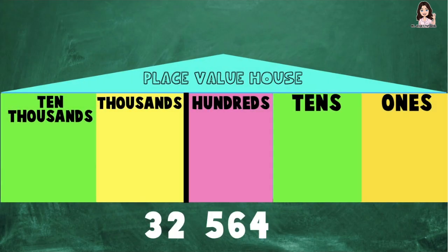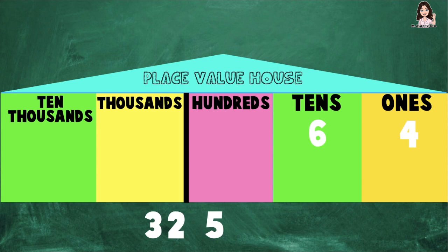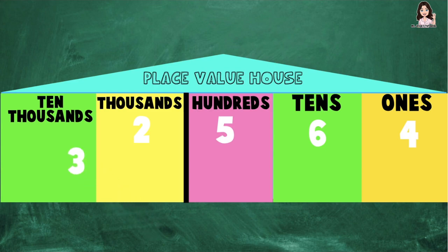For example, I have the number 32,564. Again, children, let's find out first the place value of each digit. Digit 4 — that's correct, at the ones place. Digit 6 — good job, that is at the tens place. Digit 5 — amazing, that is at the hundreds place. Digit 2 — fantastic, that is at the thousands place. How about digit 3? Very good, that is at the ten thousands place.